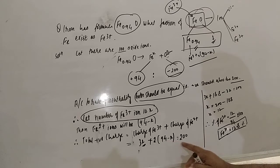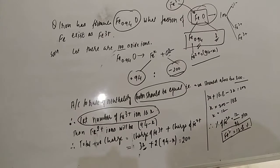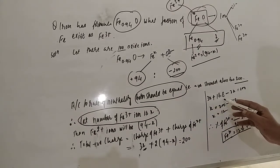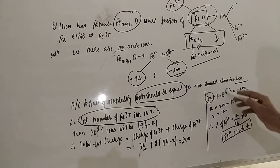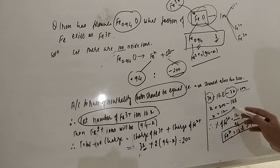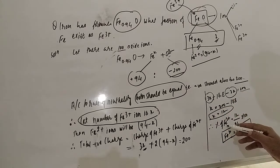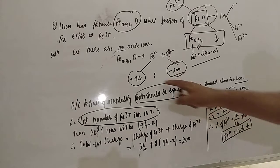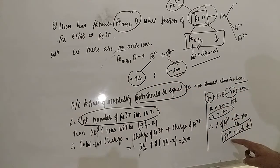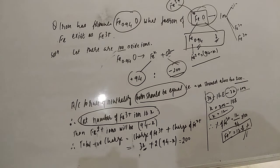Solving the equation: 3X + 188 − 2X = 200, so X = 12. Therefore, the percentage of Fe³⁺ equals Fe³⁺ divided by total Fe, times 100, which is 12 divided by 94 times 100, giving Fe³⁺ = 12.8%. Thank you so much for watching, friends.